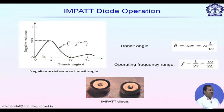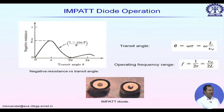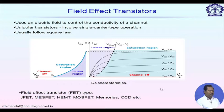The transit angle theta is defined as omega times t, where t = l/V_d, with l being the length of the intrinsic region. Negative resistance depends on the transit angle and is maximum when the transit angle equals pi. The relationship is nearly periodic with decreasing amplitude; at transit angle equal to zero and 2*pi it has minimum value. Photographs show typical IMPATT diodes used at the 90 GHz band.